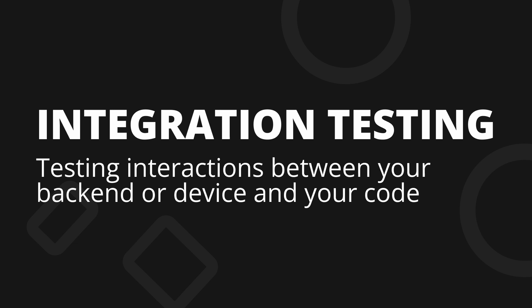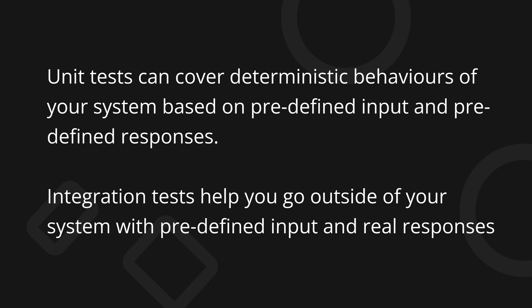The second form of testing is integration testing. This form of testing allows you to test the interactions between your backend or device and your code. These tests use real functionality with predetermined data to ensure that your system is interacting the way you expect with everything outside of your current system, such as saving data to a database or making a real HTTP request and seeing if your app still responds the same.